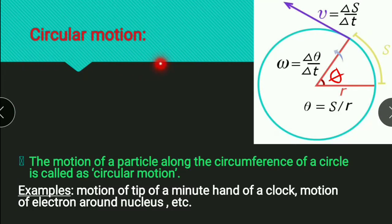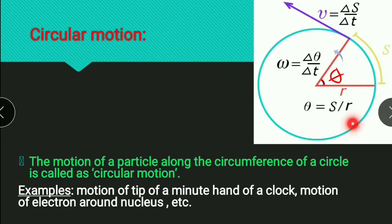So what is circular motion? The motion of a particle along the circumference of a circle is called circular motion. For example, the motion of the tip of a minute hand of a clock, or the motion of an electron around the nucleus. Another basic daily life example: if a stone is tied to a string and whirled, the stone performs circular motion.